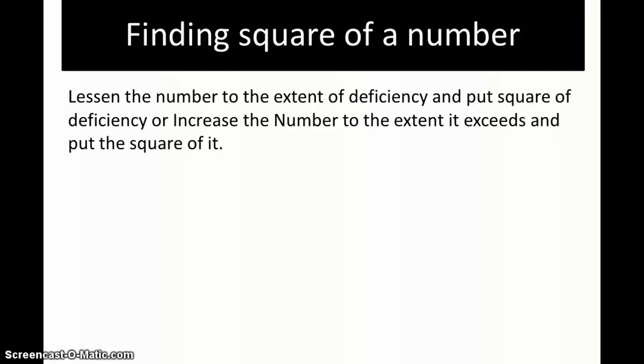Taking the first example, let's find the square of a number. Let's take the case of 93. So 93 is 7 less than 100. To find the square, the rule says lessen the number to the extent of the deficiency.